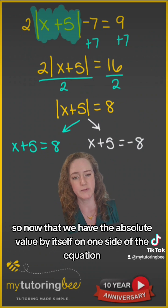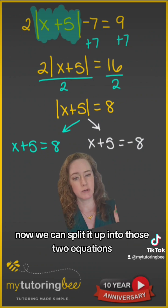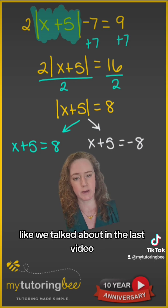All right, so now that we have the absolute value by itself on one side of the equation, now we can split it up into those two equations like we talked about in the last video.